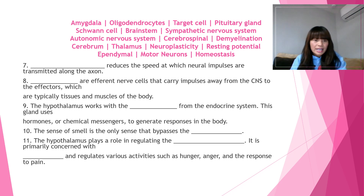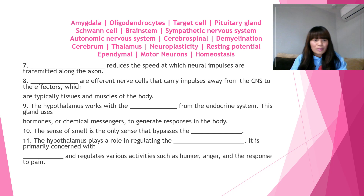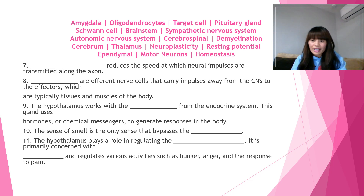Number nine: the hypothalamus works with the blank from the endocrine system. The gland uses hormones or chemical messengers to generate responses in the body. The answer is the pituitary gland. The pituitary gland belongs to the endocrine system and uses hormones or chemical messengers to generate responses in the body.